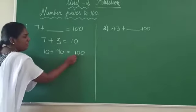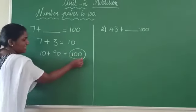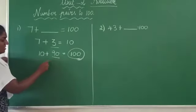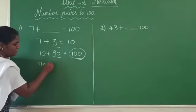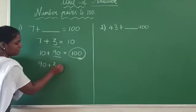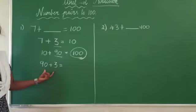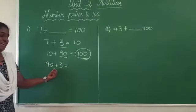Now we have got our answer as 100. Now you have to take the missing numbers. So what is given here? You have 90 plus 3. So this is in expanded form.